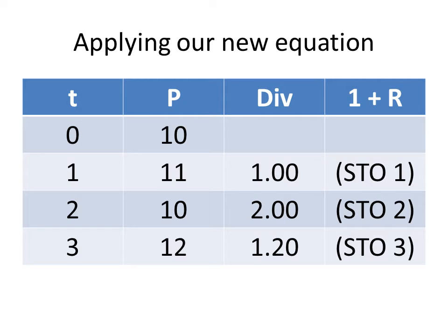And I want you to notice that we only have 1 + R for times 1, 2, and 3. The reason is you always have to have the prior period price in order to be able to figure out a return. If we wanted to know the return at time 0, we would have to know the price at time negative 1. And that's information we simply don't have.